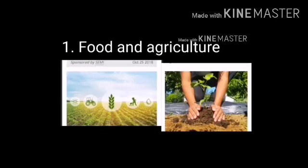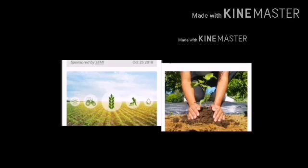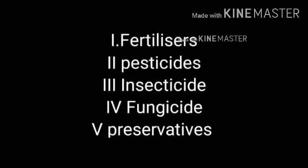The first one is food and agriculture. We need food, and this world depends on agriculture. Along with the quality of food, it is also important to increase its production with increasing population. Chemistry has helped farmers by providing them some chemicals — fertilizers, pesticides, insecticides, fungicides, and preservatives.